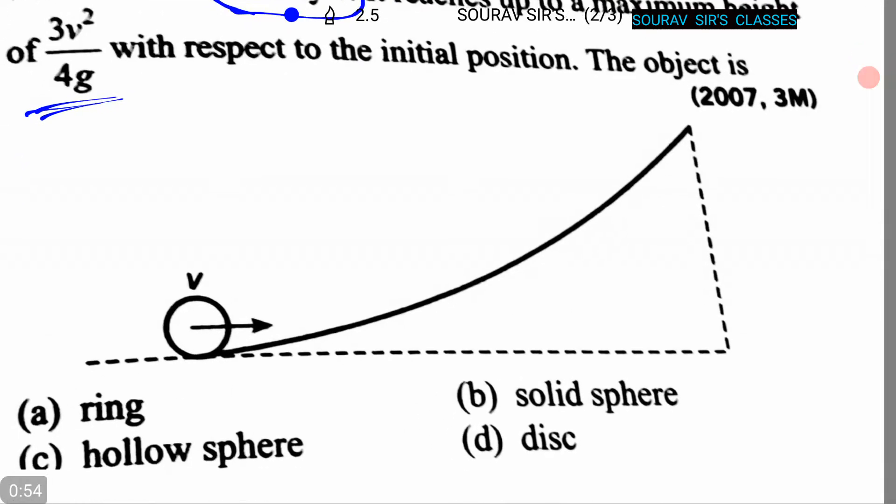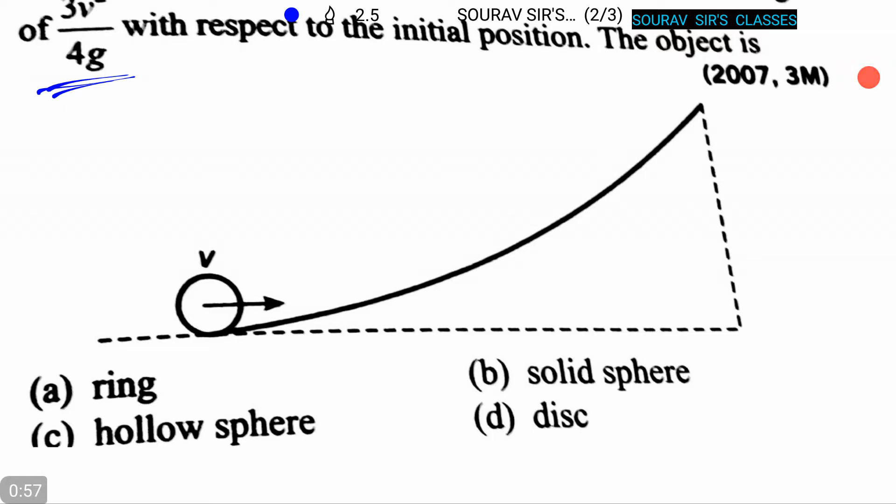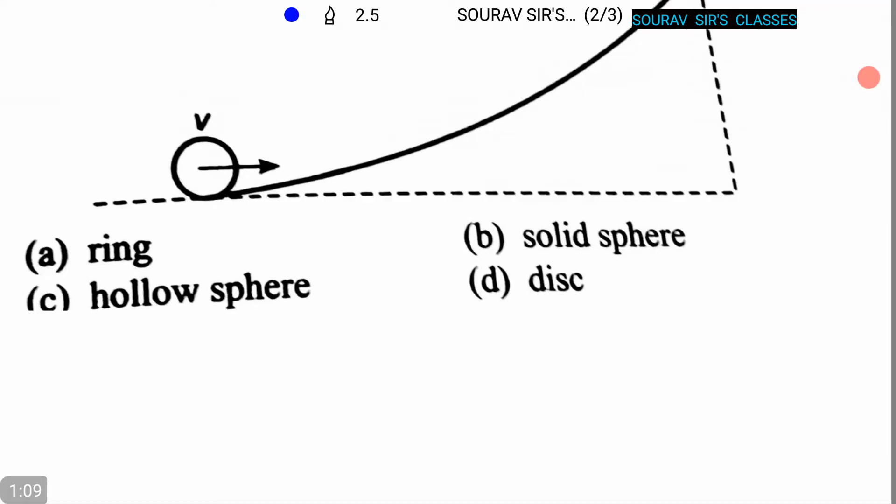Now we have to find what kind of object it is. Four options are given: option A is ring, option B is solid sphere, option C is hollow sphere, and option D is disk. Here a figure is also given. So now let's start.